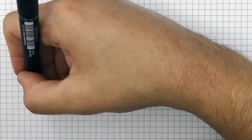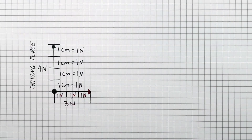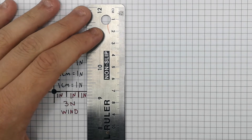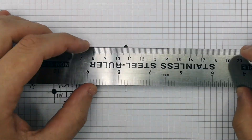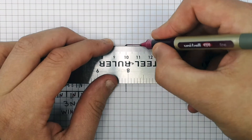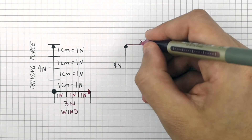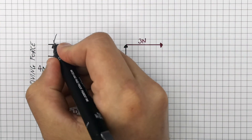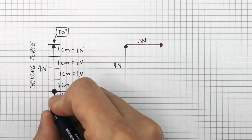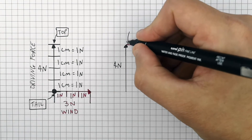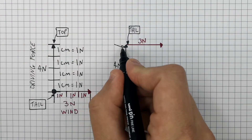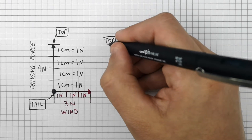The four centimeter line represents the four Newton driving force in a forward direction, and the line going east represents the three Newton force from the wind. To work out the resultant force, we must draw the forces tip to tail. The tip is where the arrow is on the driving force, and the tail is the other end. So we draw the easterly three Newton force from the wind starting at the tip of the four Newton driving force.